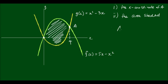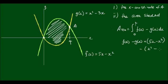Now the shaded area is going to be equal to the integral from x equals 0 to x equals 4 of f of x minus g of x with respect to x. And f of x minus g of x is equal to 5x minus x squared minus x squared minus 3x. And expanding and simplifying I will get 5x minus x squared plus 3x,